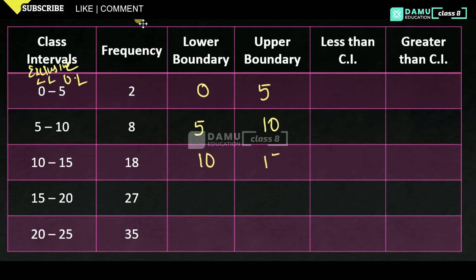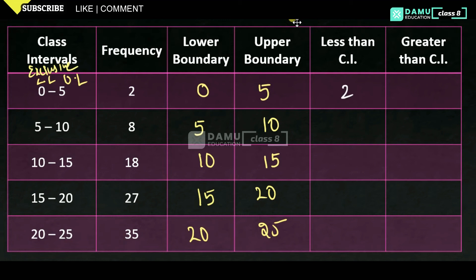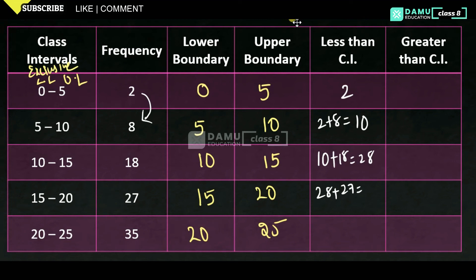While calculating less than cumulative frequencies, we take the highest value and add from top to bottom. So 2 stays as 2; then 2 plus 8 equals 10; then 10 plus 18 equals 28; then 28 plus 25 gives 53 — wait, 55; then 55 plus 35 equals 90. These are the less than cumulative frequency values.